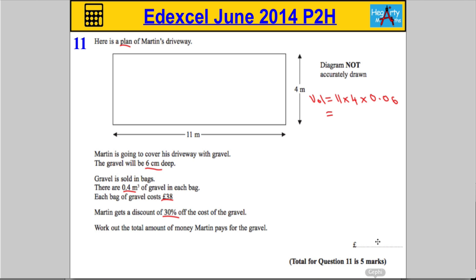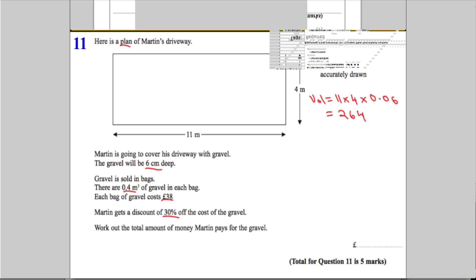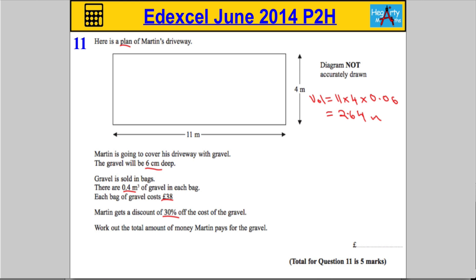So working that out, 11 times 4 times 0.06, let's see, 4 times 6 would be 24, that's going to be 0.24, and 24 times 11 is going to be 264, so it must be 2.64 meters cubed. Now you can do that with the calculator. I've used a few little tricks to get that sorted.